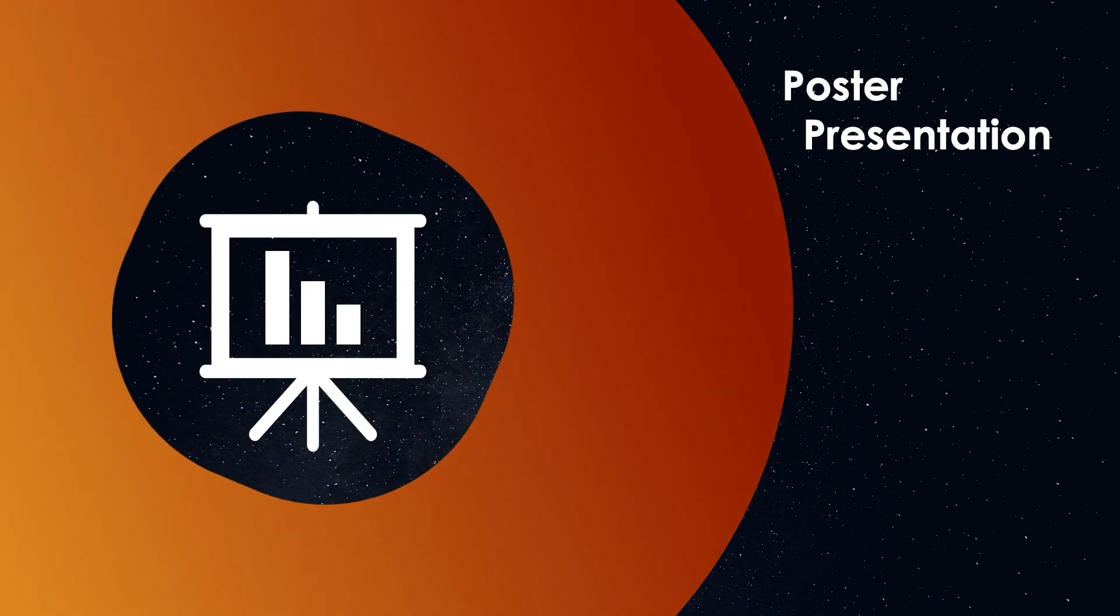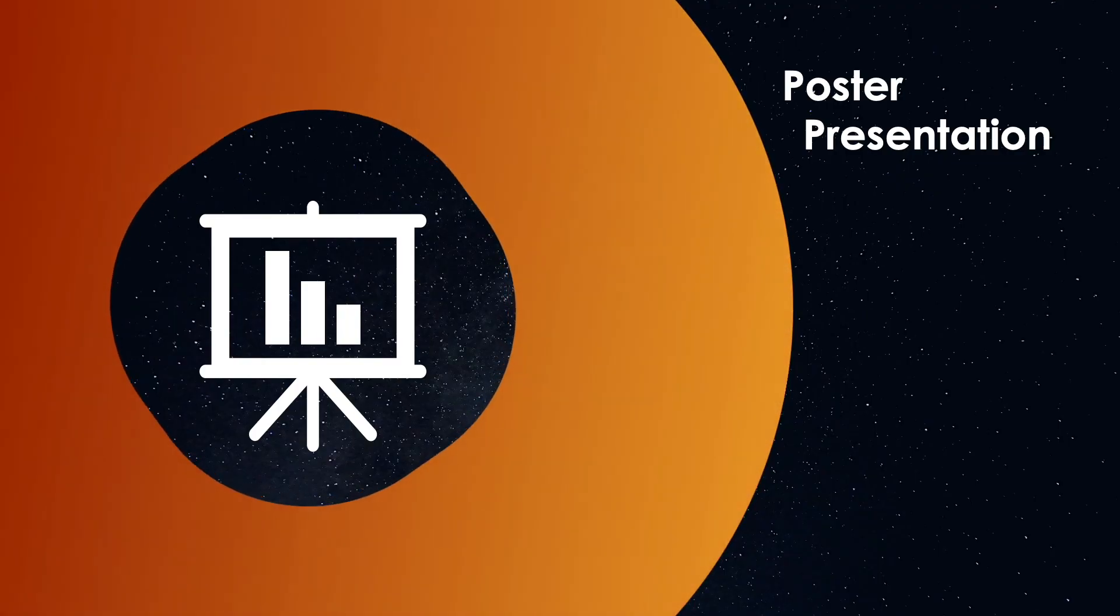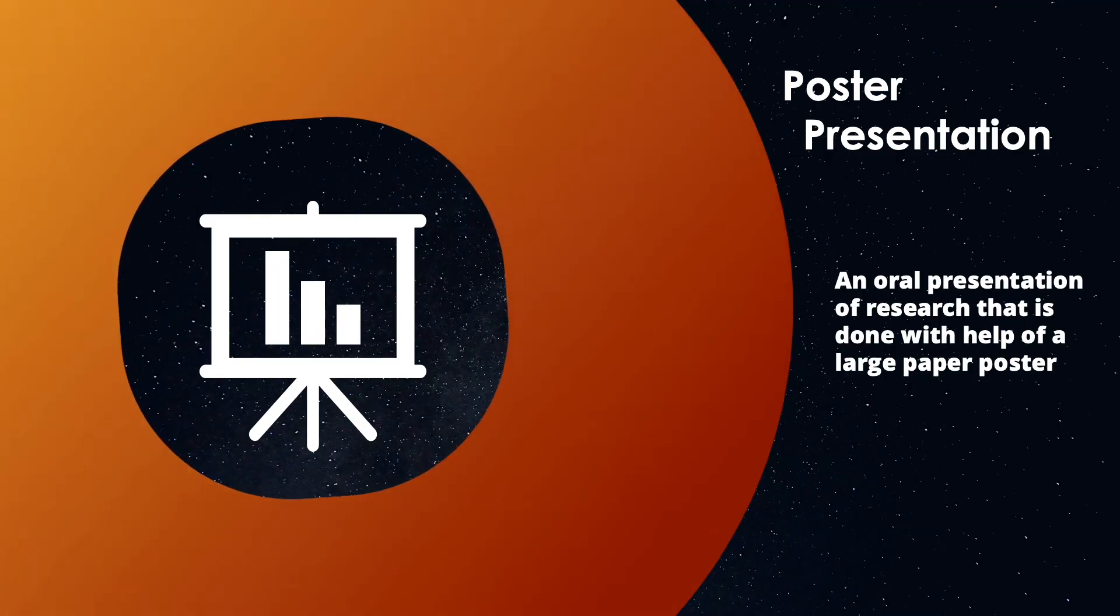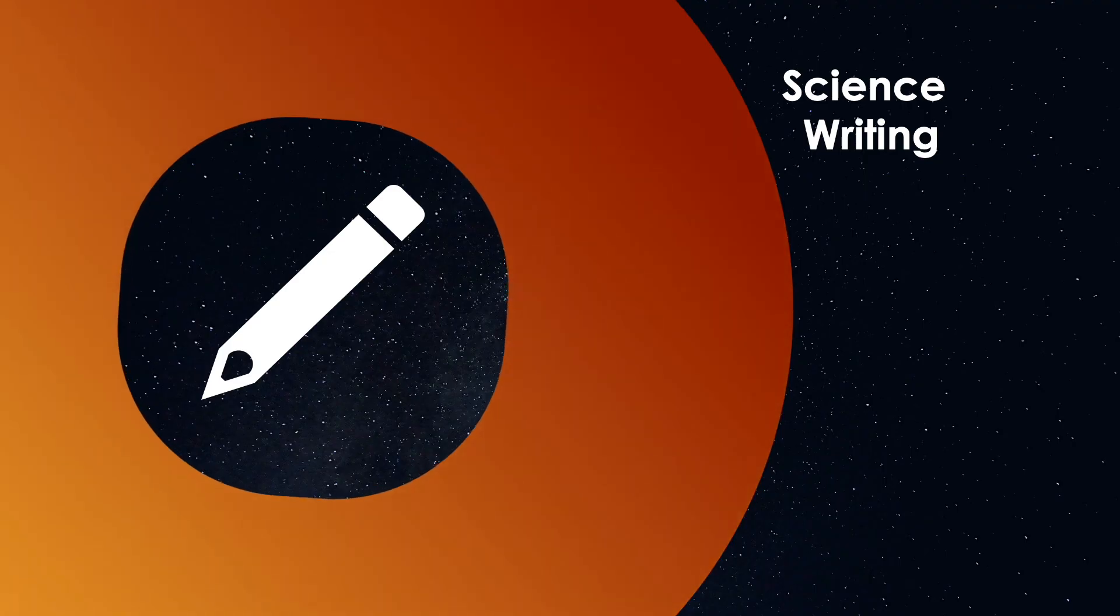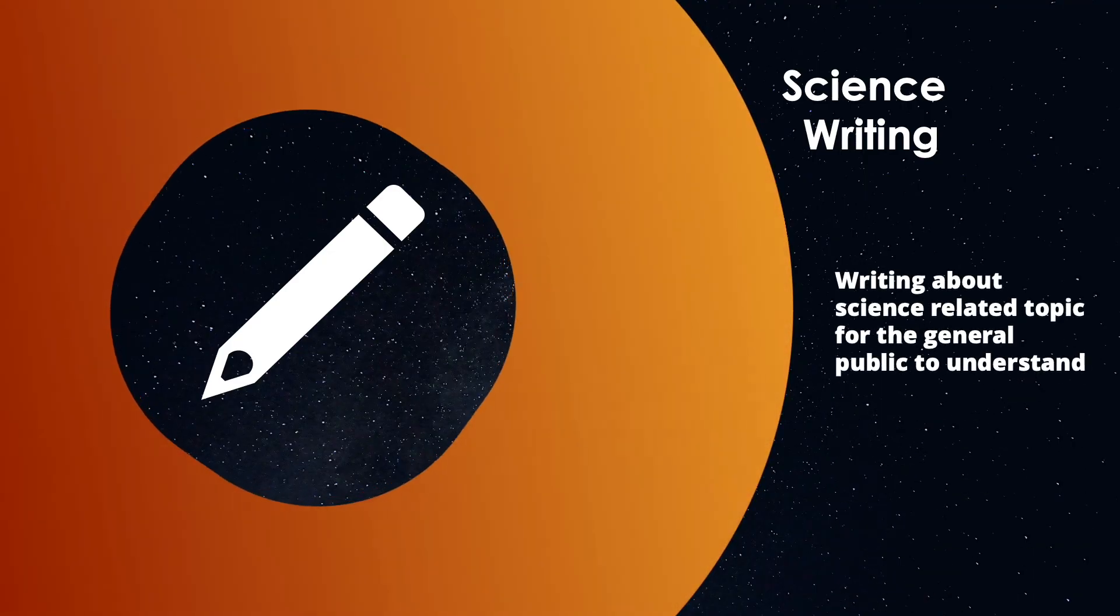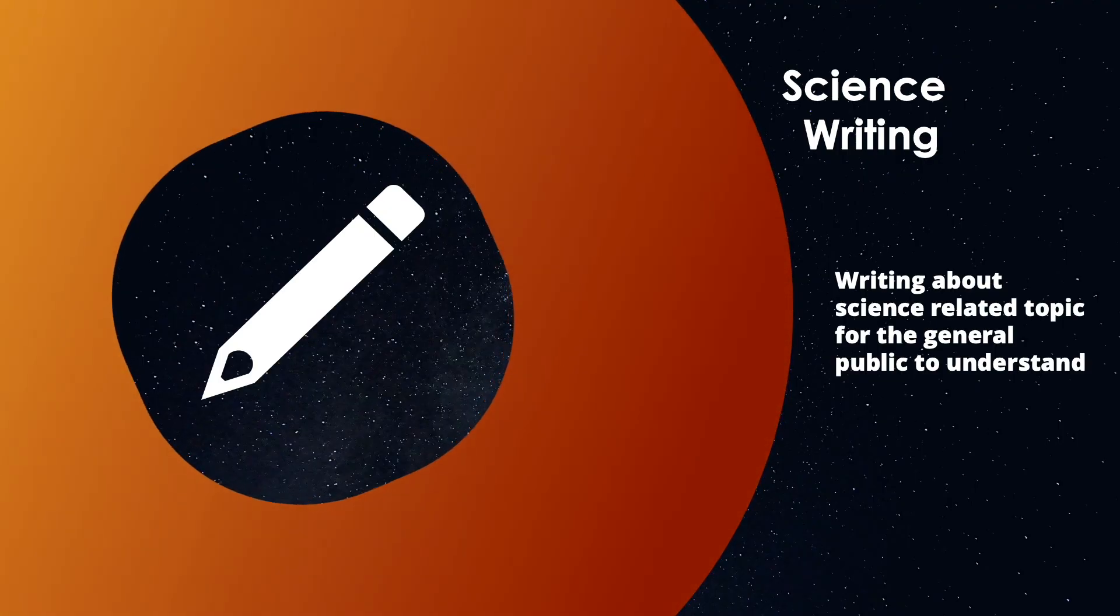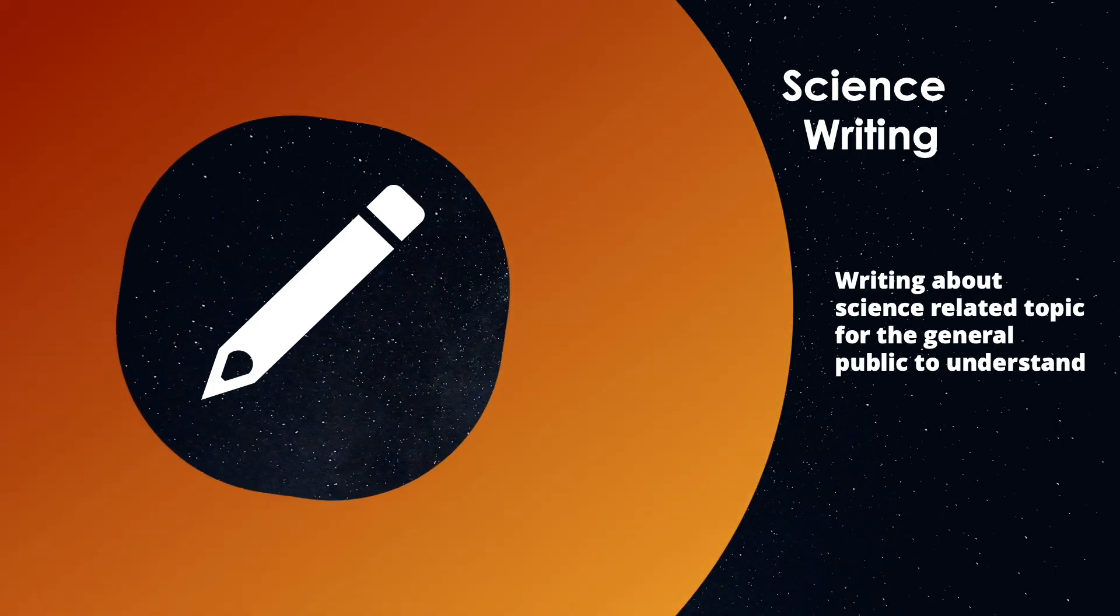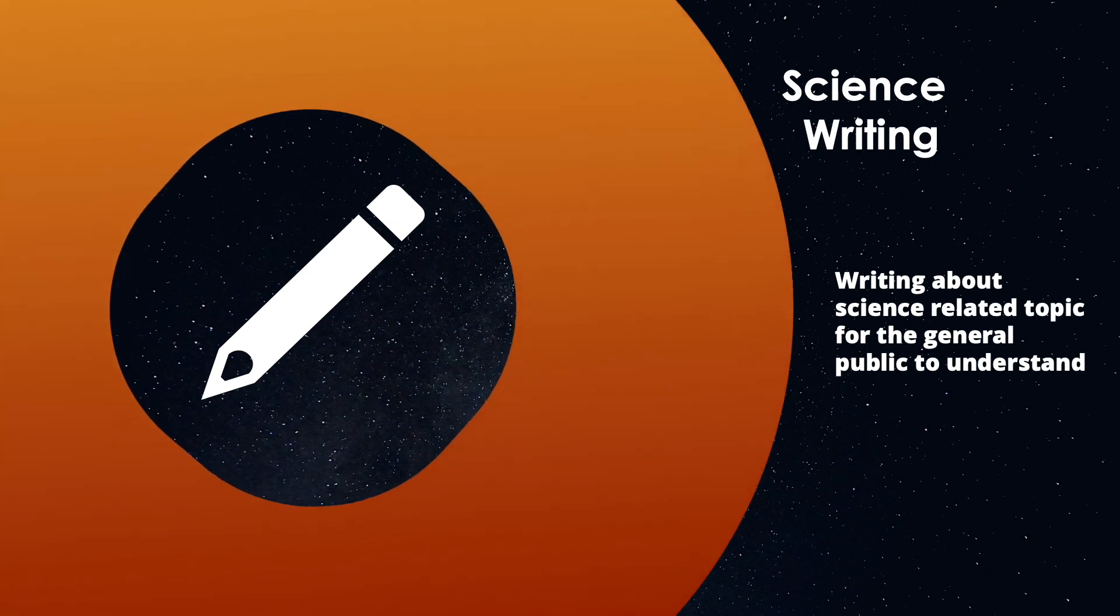The next type of scientific writing is a poster presentation, which is essentially an oral presentation of research that is done with the help of a large paper poster. Finally, we have science writing, which is writing about a science-related topic for the general public to understand. Science writers research, write, and edit scientific news, articles, and features for business or scientific and technical journals, and the general media.